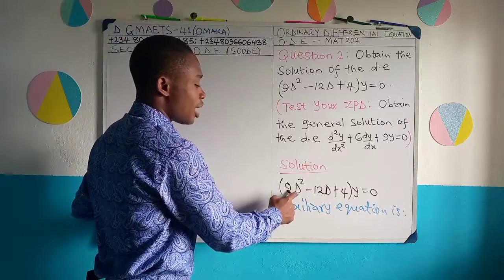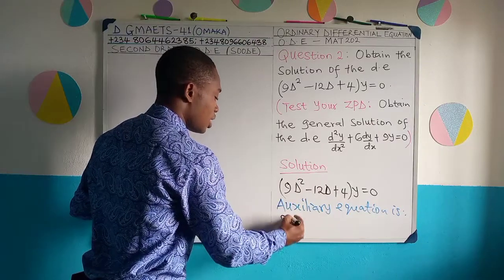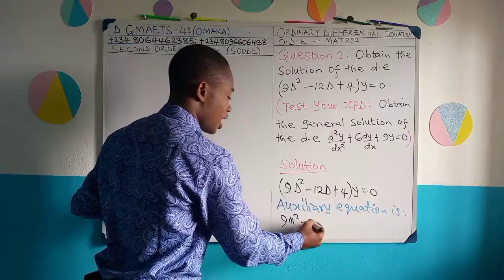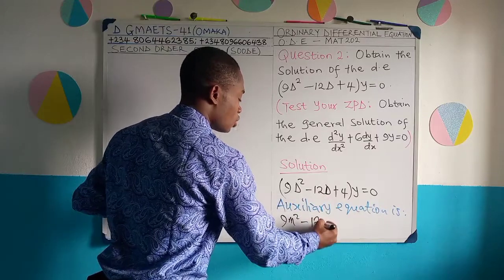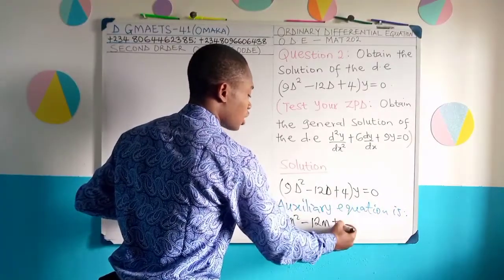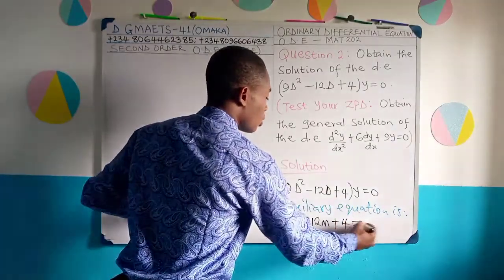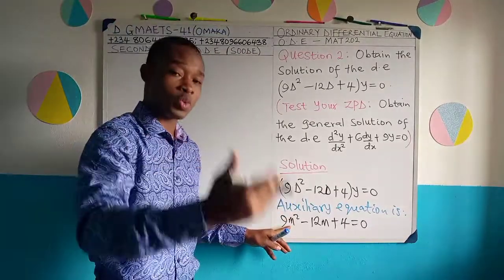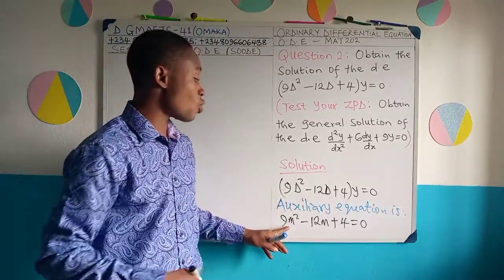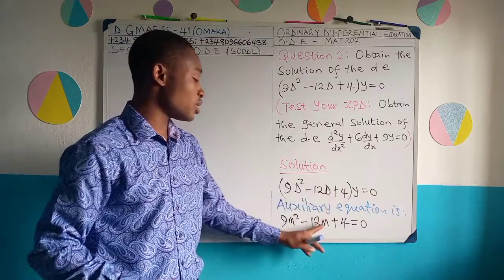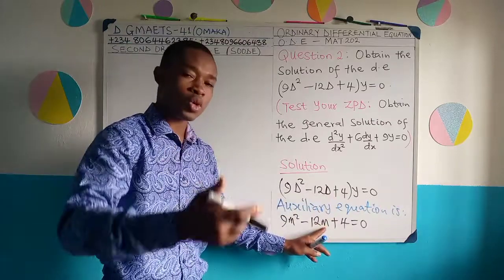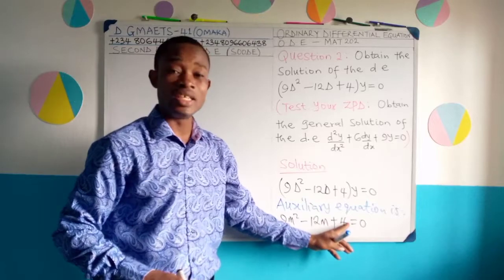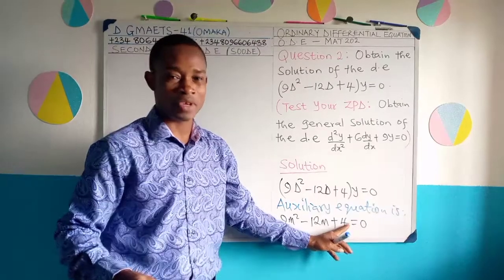The auxiliary equation is: 9m² - 12m + 4 = 0. Remember, d² represents m raised to power 2 in the auxiliary equation. D raised to power 1 is the same as m raised to power 1. There is no derivative term with the constant 4, so no m is needed there.